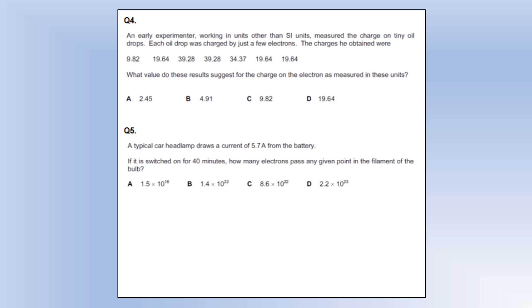An early experimenter working in non-SI units measures the charge on tiny oil droplets, each charged by just a few electrons. This looks very much like Millikan's oil drop experiment — the experiment to measure the charge of an electron. All these numbers must be an integer multiple of the fundamental charge. The way to find the fundamental unit is to find the smallest difference between numbers — found here between 39.28 and 34.37 — giving our best estimate of the electron's charge.